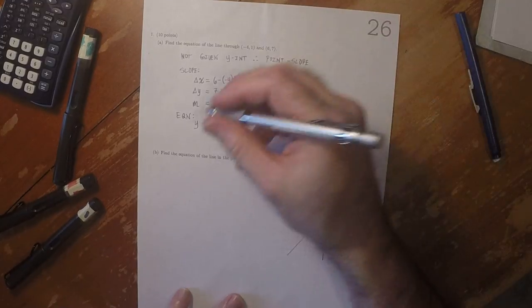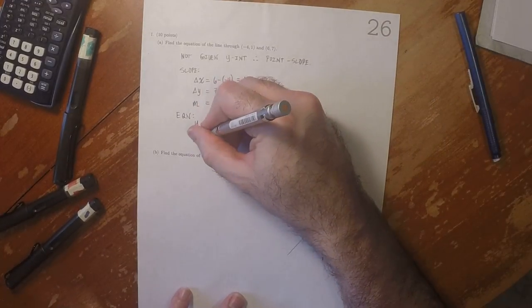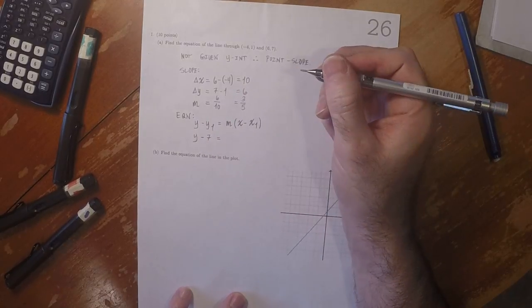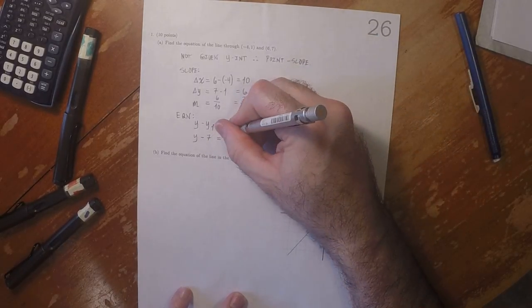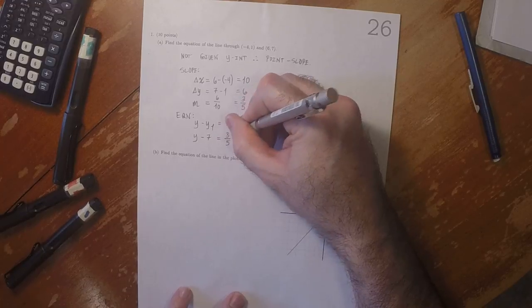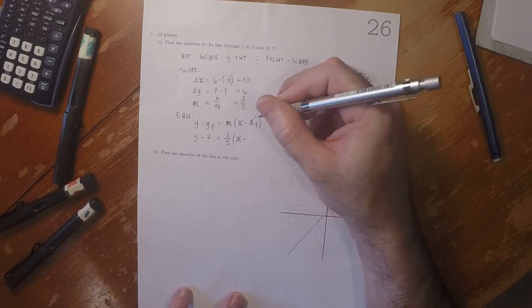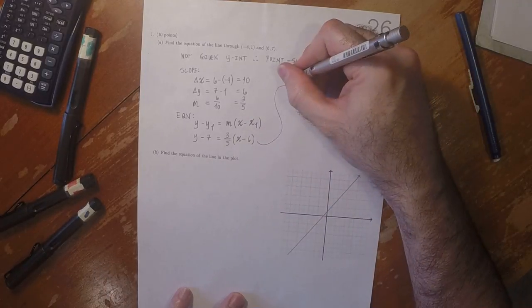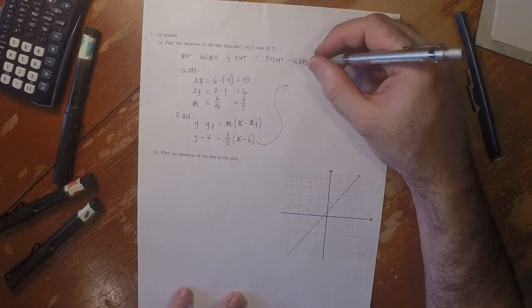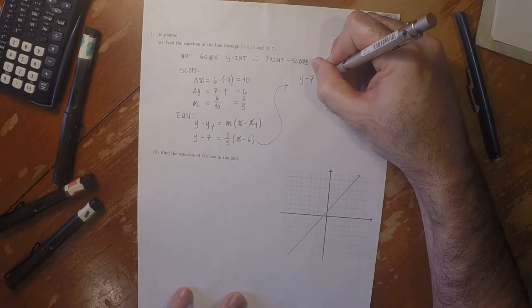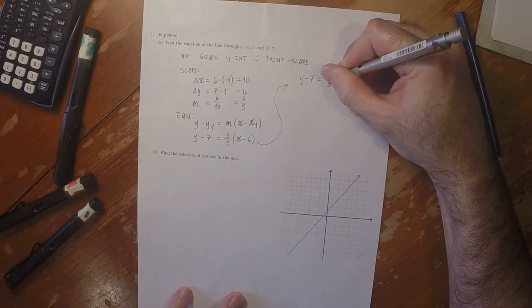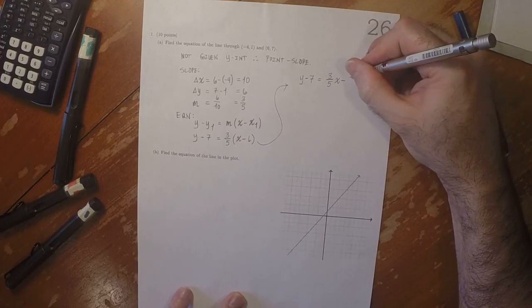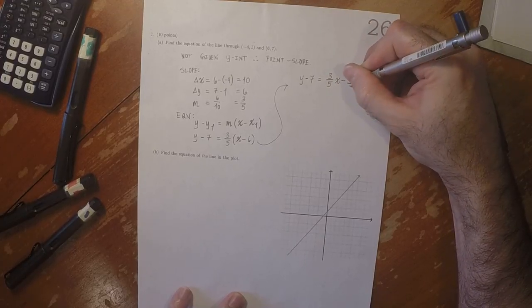So y minus 7 is 3 fifths times x minus 6. That gives us y minus 7 equals 3 fifths x minus 18 fifths.